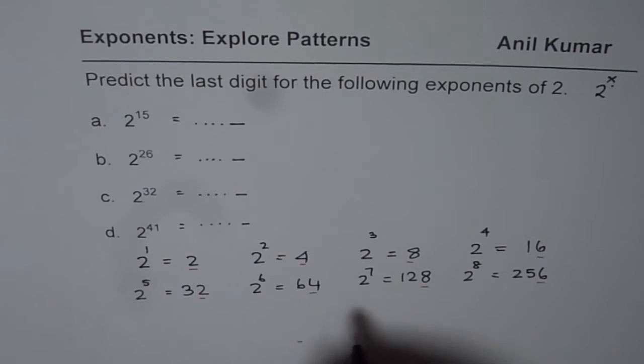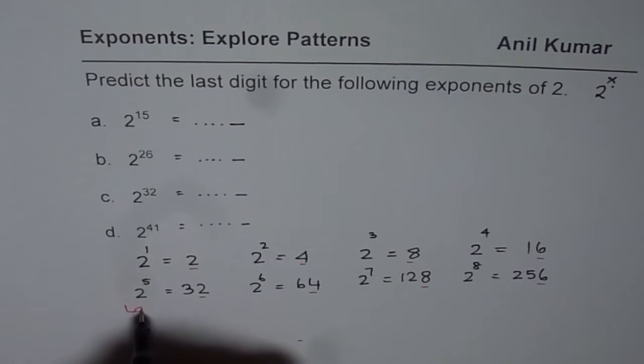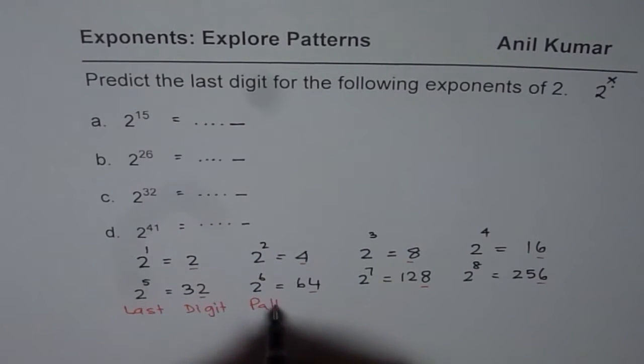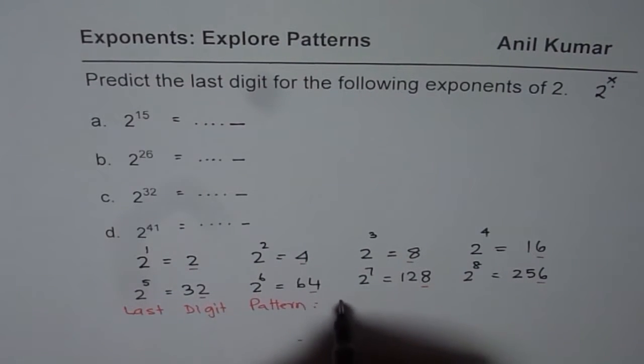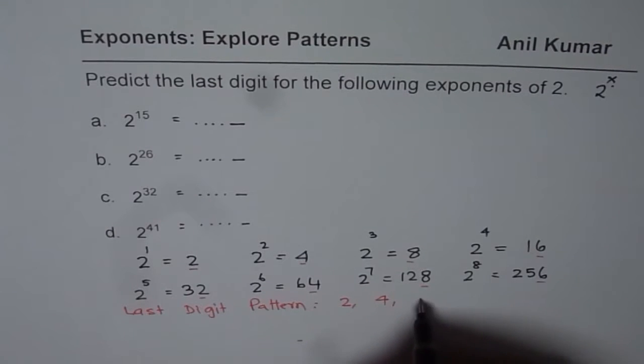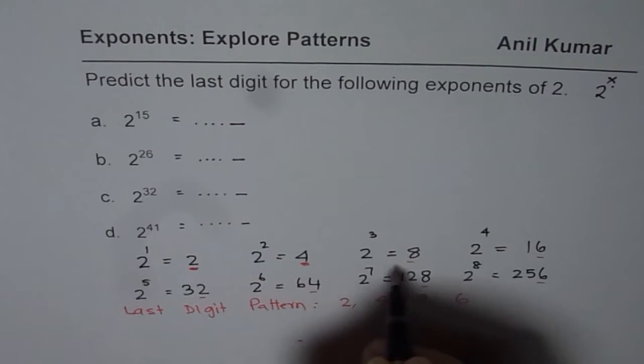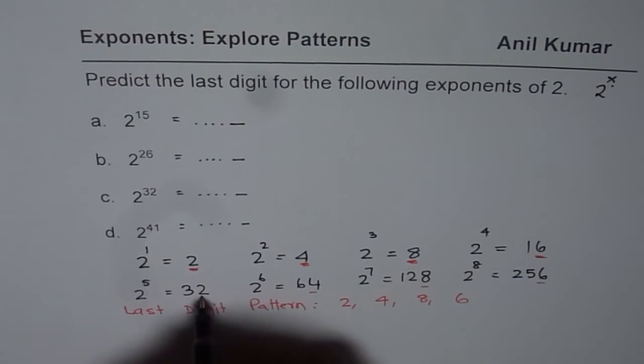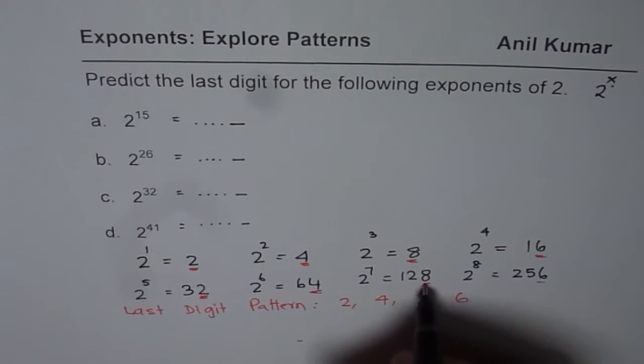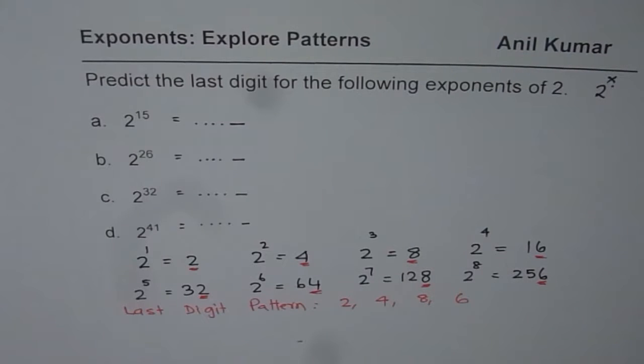So what you notice here is a pattern for the last digit. Let me write it down here. It is 2, 4, 8, 6. So it is 2, 4, 8, 6. 2, 4, 8, 6. That is what it is.